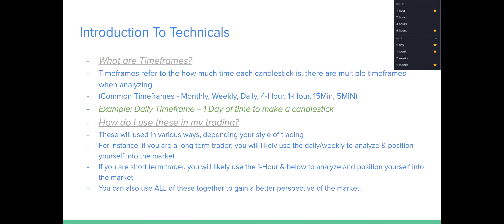What are timeframes? Timeframes refer to how much time each candlestick represents. Common timeframes are monthly, weekly, daily, four-hour, one-hour, 15-minute, and five-minute. On your TradingView chart, you'll see a dropdown menu of timeframes. One month means one candlestick takes one month of data. A weekly timeframe means a whole week of data makes up one candlestick. One day takes a whole day to make one candlestick, and so on for all timeframes — one hour takes one hour of data to make one candlestick.